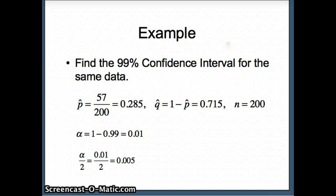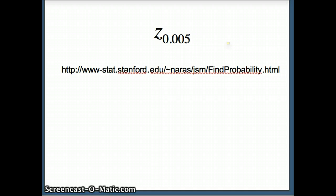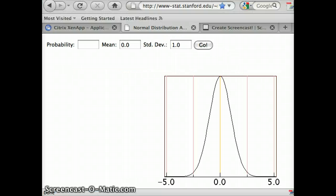So what we need to do is we need to find z of 0.005. And I'd like to use the applet that is on the screen to go ahead and find z of 0.005. So you'll notice I put in a zero for the mean and one for standard deviation, because that's what we have to have for a standard normal, and I want 0.005 in the left tail. Then we'll let the applet compute that.